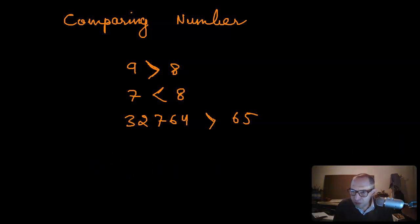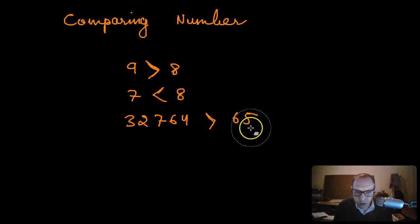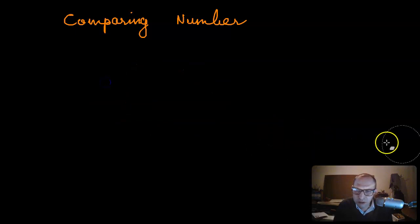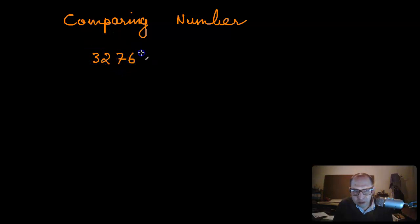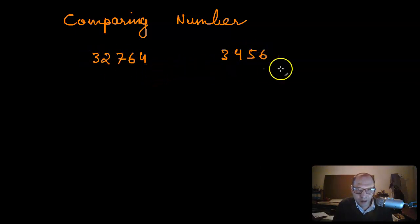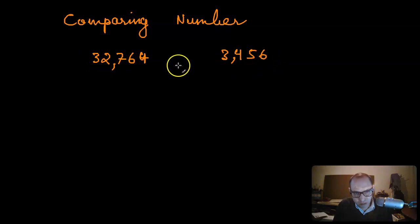In comparing numbers, there are only two cases — with their own variations — that you need to use. For example, let's say that you have 32,764 and you have 30,400. So this is a five-digit number and this is a four-digit number. If I asked you which number is greater, you already know that 32,000 is of course greater than 3,000.